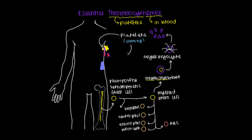Over time, platelets can get sheared as they pass through the vasculature and become deformed, so they're no longer effective and need to be removed. They go to the spleen, which acts as a filter for the blood and destroys any deformed or unusual blood cells passing through. That's what happens for a platelet throughout its lifetime.